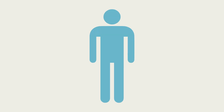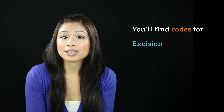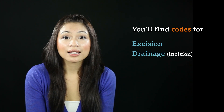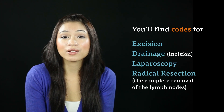The lymphatic system is composed of a series of nodes throughout the body. If you've ever had a sore throat, you've probably had swollen lymph nodes. Like the spleen, lymph nodes act as blood filters, and they're also instrumental in the storage of B and T cells, which are the frontline fighters of the immune system. Despite the lymphatic system's importance, there are relatively few procedures listed under its subsection. You'll find codes for excision, drainage or incision, laparoscopy, and radical resection — the complete removal of the lymph nodes.